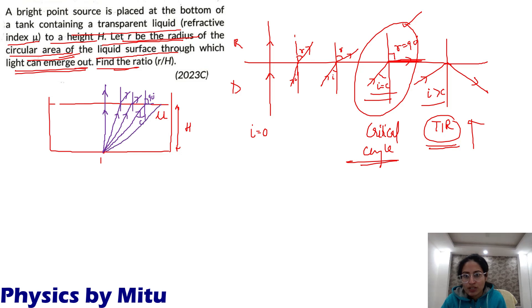Beyond this, if we increase the angle of incidence, the ray of light will reflect back. On both sides, this happens. So emergence of light occurs only from this area. The light emerges out only from this area. Beyond this, refraction is happening. The light will not come out of the water. So this is the area we're talking about. R is the radius of the circular area of the liquid surface through which light can emerge out.